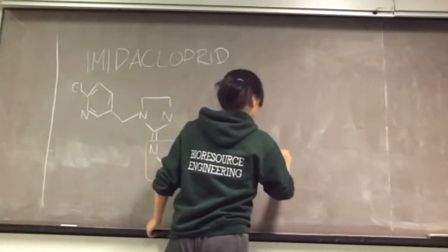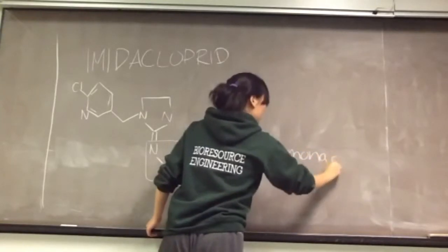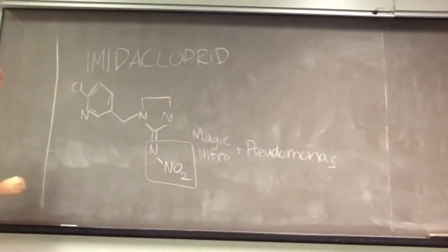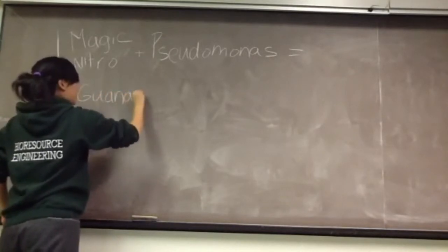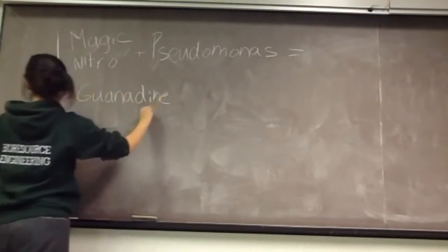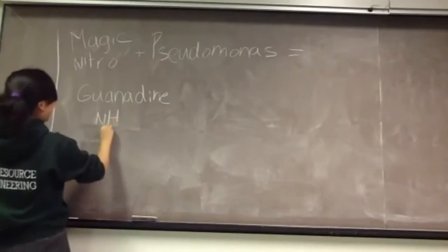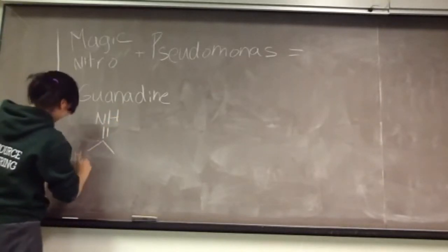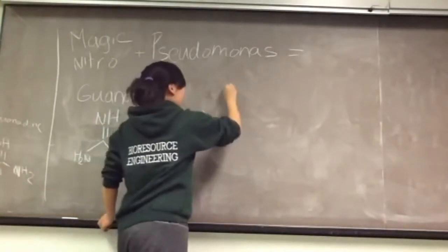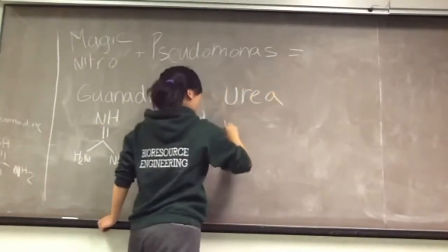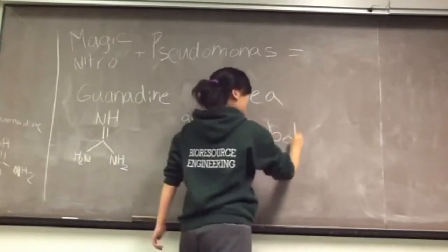In imidacloprid, the Pseudomonas bacteria attacks the nitrogen groups and changes its molecular structure. The Pseudomonas bacteria can degrade imidacloprid by metabolizing the nitrogen group and producing guanidine derivatives as well as urea metabolites. However, the guanidine can be toxic. Luckily, it has a very short half-life and is not considered dangerous. Urea is naturally present in the soil and is not a concern.